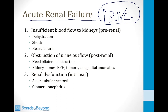The first mechanism is insufficient blood flow to the kidneys, called pre-renal failure. If you don't deliver enough blood to the kidneys, they can't filter appropriately even if they are healthy. Pre-renal failure occurs when patients are dehydrated, in shock, leaking blood from vessels, or have heart failure preventing adequate blood delivery to the kidneys.